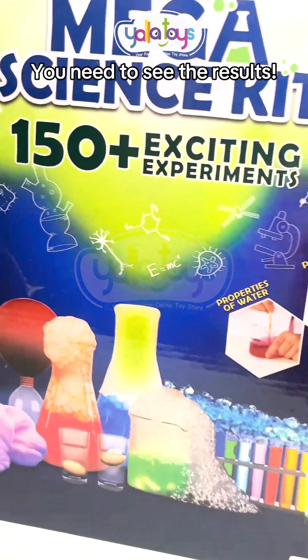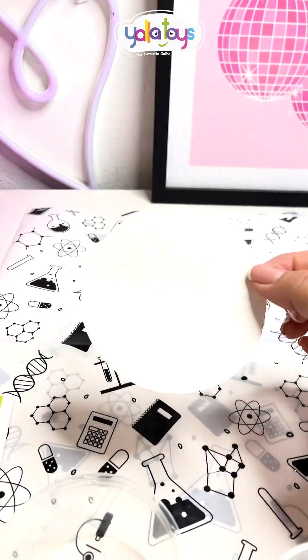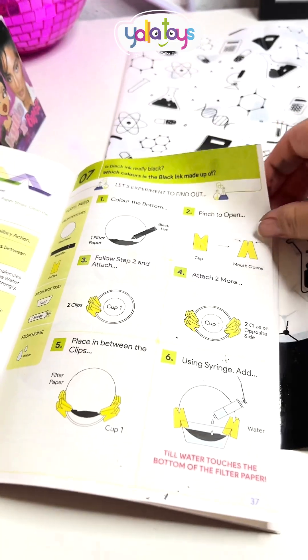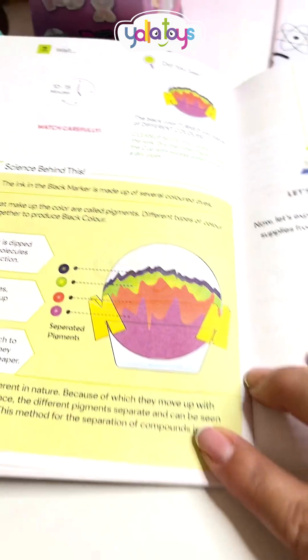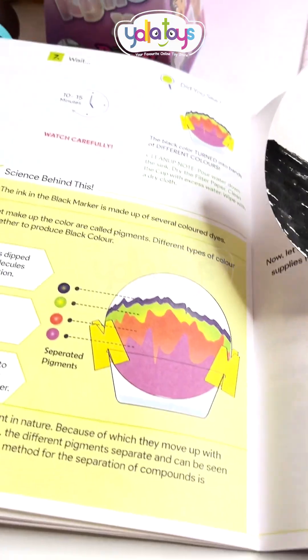Inside here there's 150 experiments, so let's make our first one. I'm going to turn this filter paper into different colors. By the way, according to the experiment book, this should be our results. So this will turn into this.